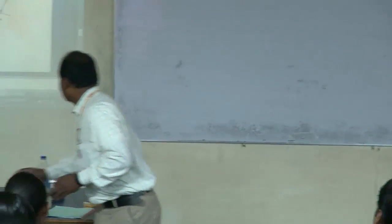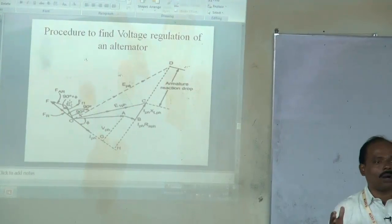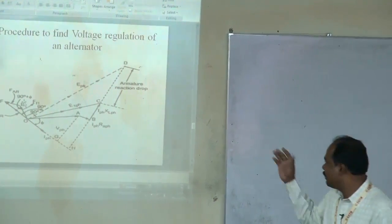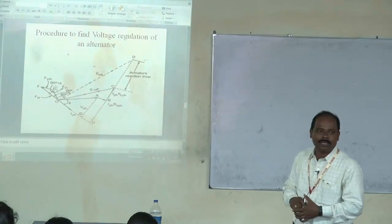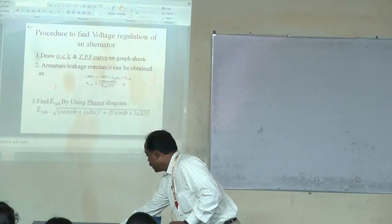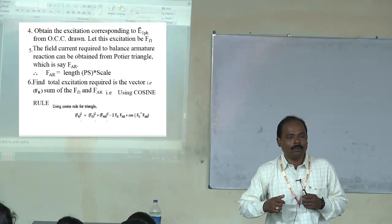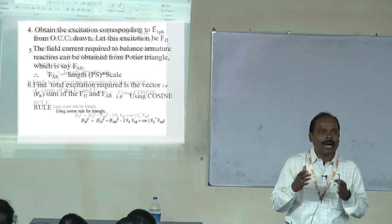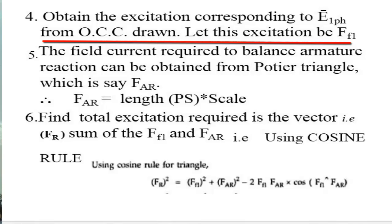Step 4: From the value of E1 obtained, find the corresponding field current FP1 from the OCC curve. Step 5: Find FAR — the field current required to balance the demagnetizing armature reaction effect — from the length of PS on the graph, scaled by the appropriate field current scale. FP1 and FAR are now known.